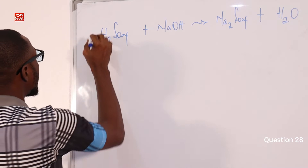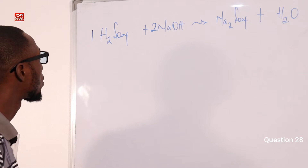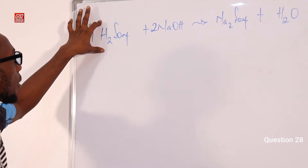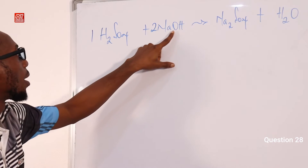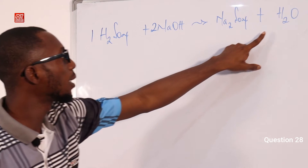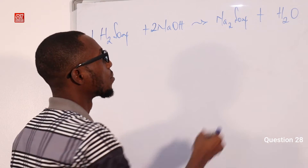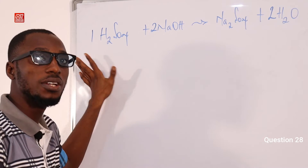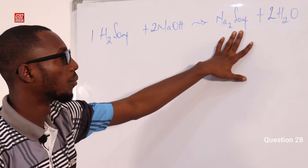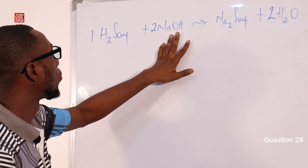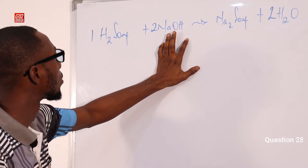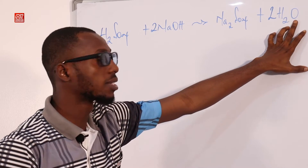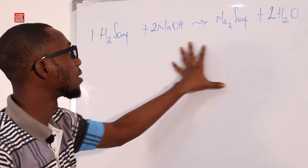To balance it, we put 2 moles of NaOH. Now let's check: we have one mole of H2SO4 giving 2 atoms of hydrogen, and 2 moles of NaOH giving 2 atoms of hydrogen — 4 atoms of hydrogen in total on the reactant side. On the product side we have 4 atoms of hydrogen. For SO4 and oxygen: we have 2 moles of oxygen on each side. So the equation is balanced. The mole ratio: number of moles of acid that reacted is 1; number of moles of base that reacted is 2.